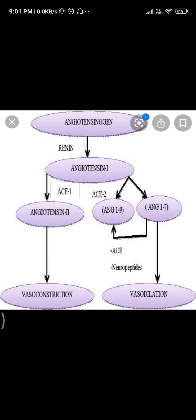Renin is an enzyme that stimulates glomerular blood flow, bringing the GFR back to normal. Since renin is a vasoconstrictor, whenever glomerular blood flow falls, the JGA cells release renin. Renin then converts angiotensinogen — a protein in blood — to angiotensin 1 and angiotensin 2.